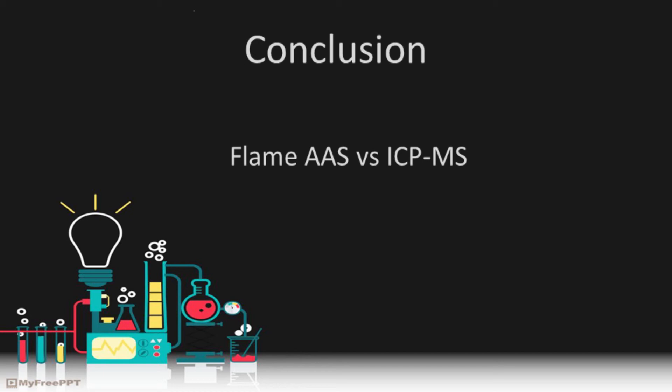Despite its detection limits, flame AAS is still a reasonable solution for iron soil analysis and is used in industries where the detection levels obtainable are acceptable and large amounts of analyte are available. It also has the advantage of relatively lower capital and running costs, as well as not producing mass effect interference. On the other hand, where speed and accuracy are paramount, ICP-MS is the obvious solution — where higher operator skill and the additional costs can be justified. Able to quantify iron soil analytes at much lower detection levels with smaller sample sizes and higher throughputs, many labs would not be able to operate as efficiently as they do without this invaluable instrument.